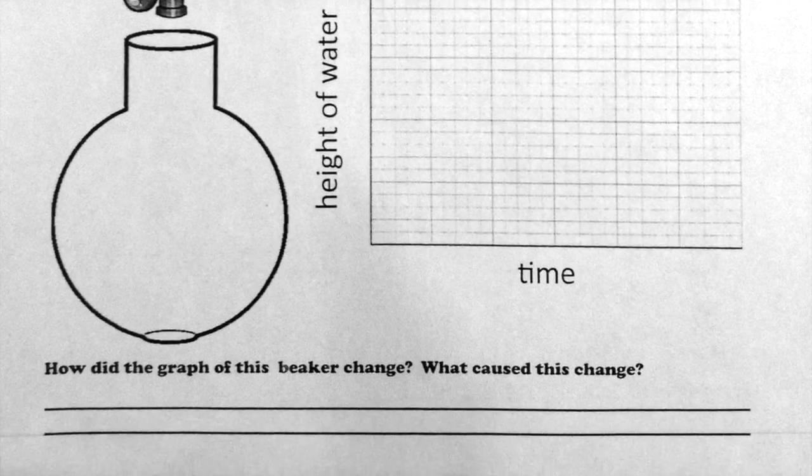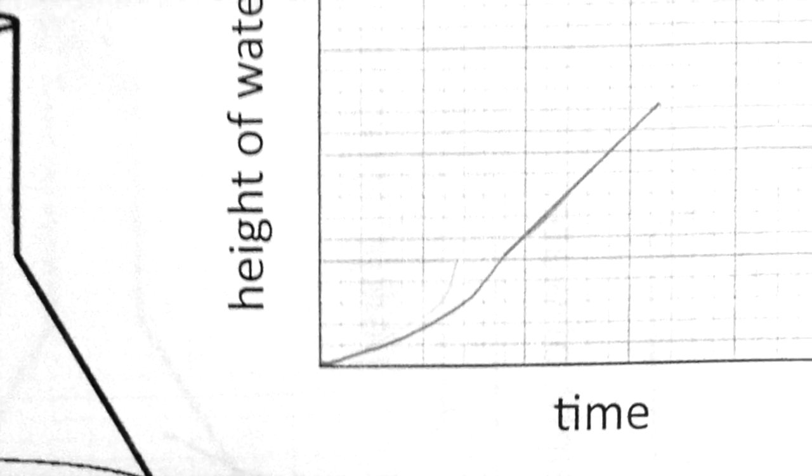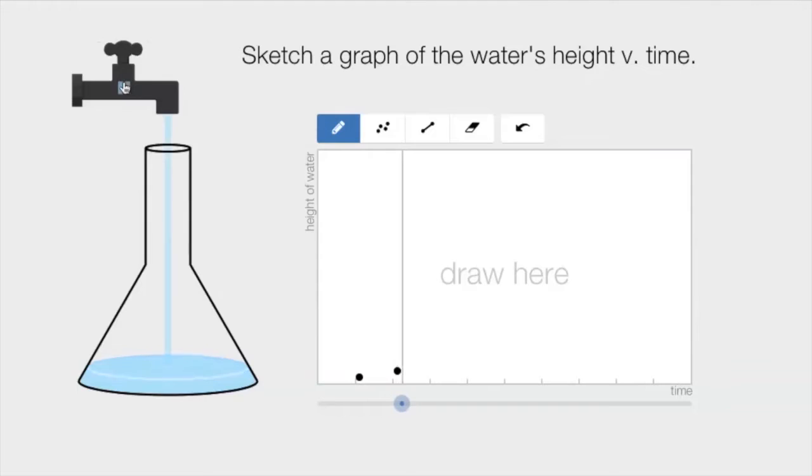Without the animation, students really had to think about the situation and how it affects the water level. Whereas on the computer, students could pause the animation at specific instances to help them graph. The paper and pencil activity provided no feedback to accurately graph. Most students were able to relate the shape of the beaker to how fast the water level would be changing, but struggled to translate this to the shape of the graph.